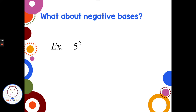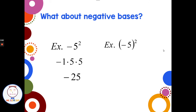Negative base rules always cause people problems. Negative 5 squared — without parentheses — is negative 1 times 5 times 5, which is negative 25. But (negative 5) squared — with parentheses — is negative 5 times negative 5, which is 25. Inside the parentheses the negative stays with the number; without parentheses you have negative 1 times 5 times 5. Completely different answers.